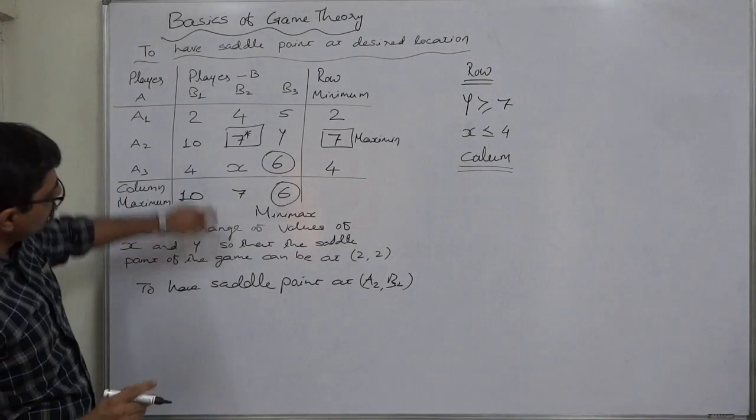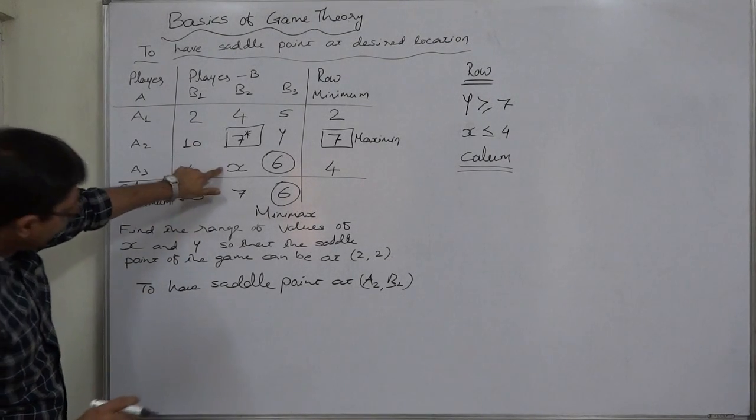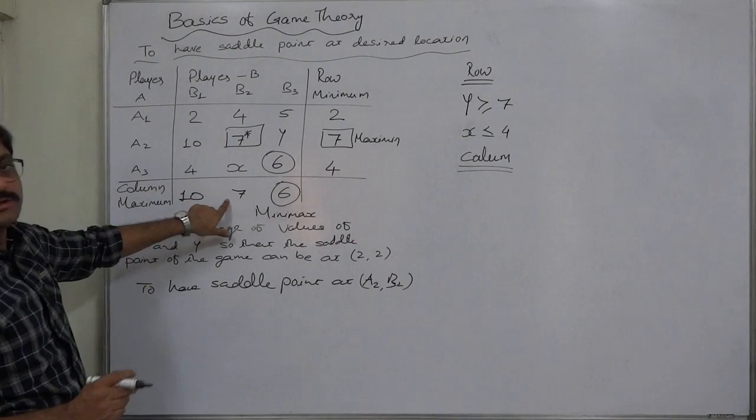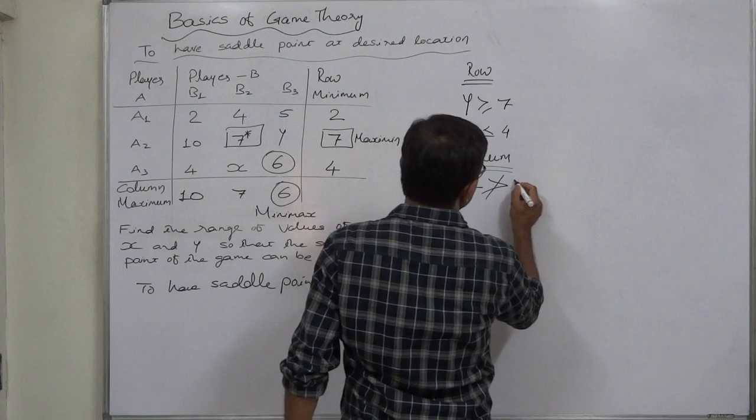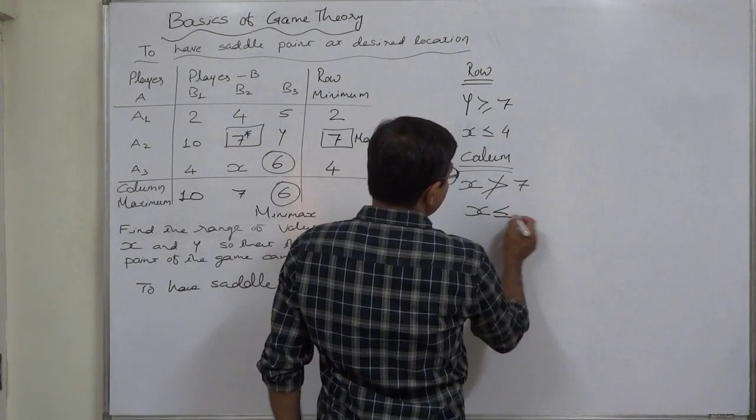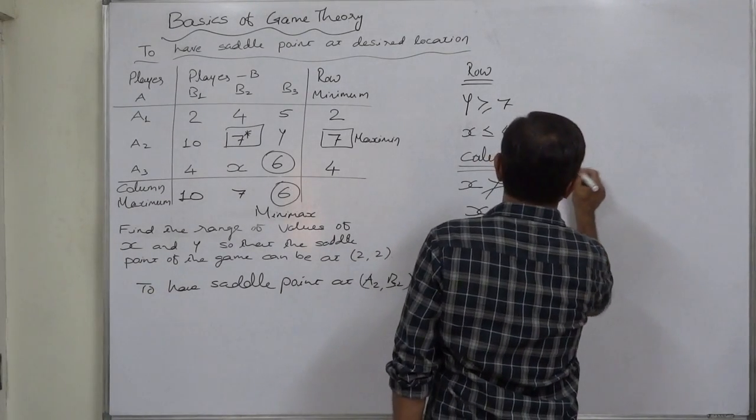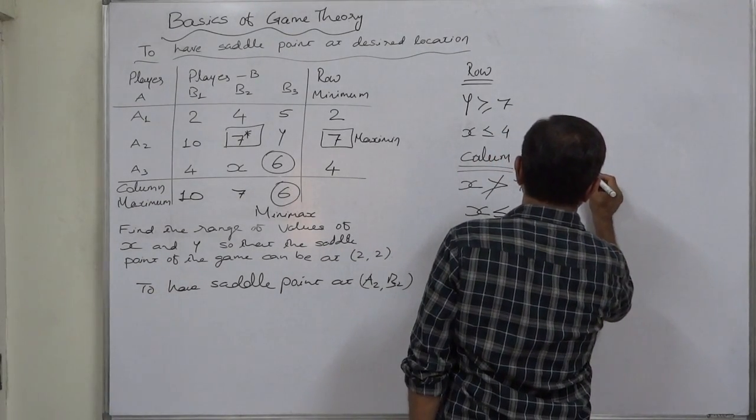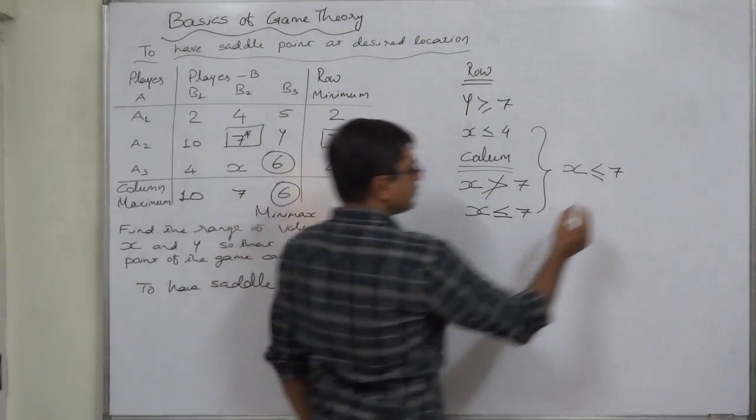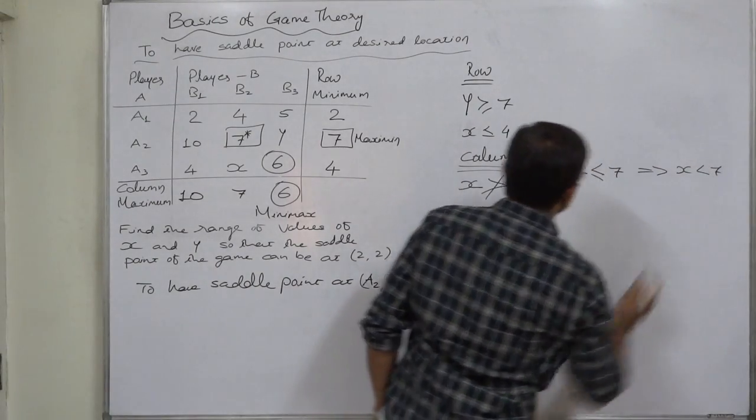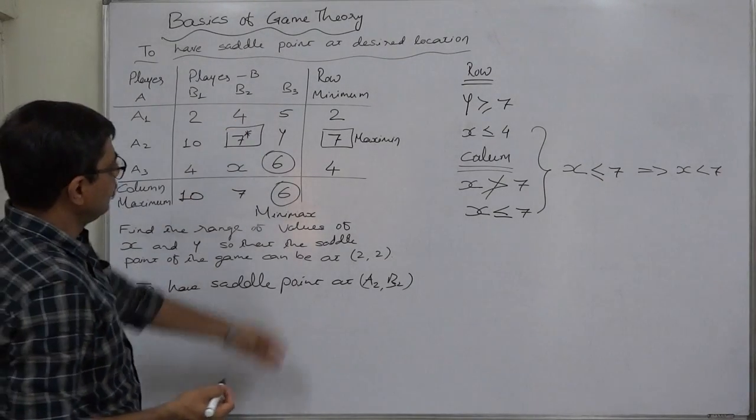Now what about column? In the first column, notice nothing is to be considered. In the second column, x is there, and ignoring x, seven becomes the highest value. If x is greater than seven, then it will substitute this seven. So x should not be greater than seven. That means x should be less than or equal to seven. Among these two, we have to select that x is less than or equal to seven, or more precisely, x is less than seven.